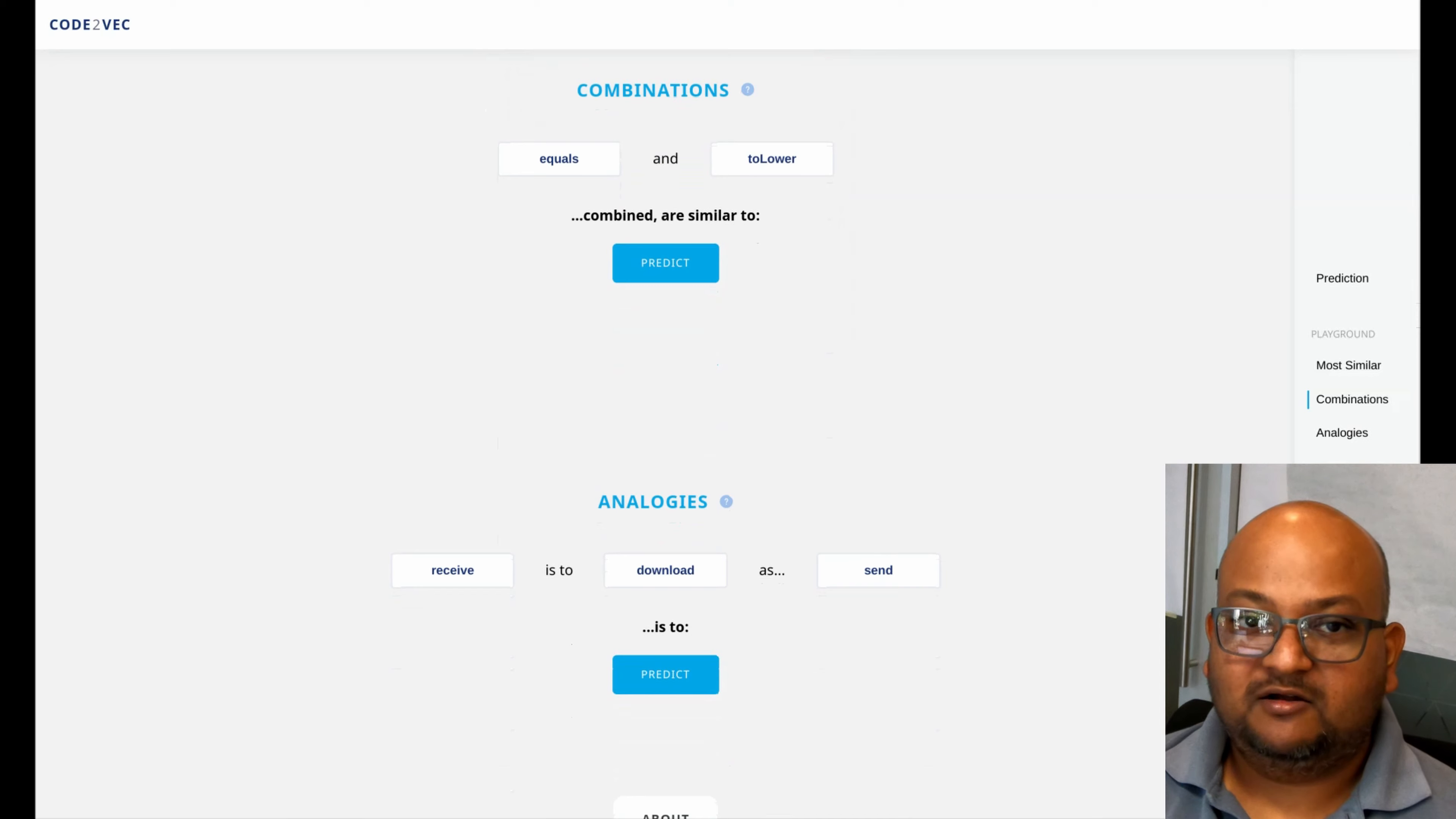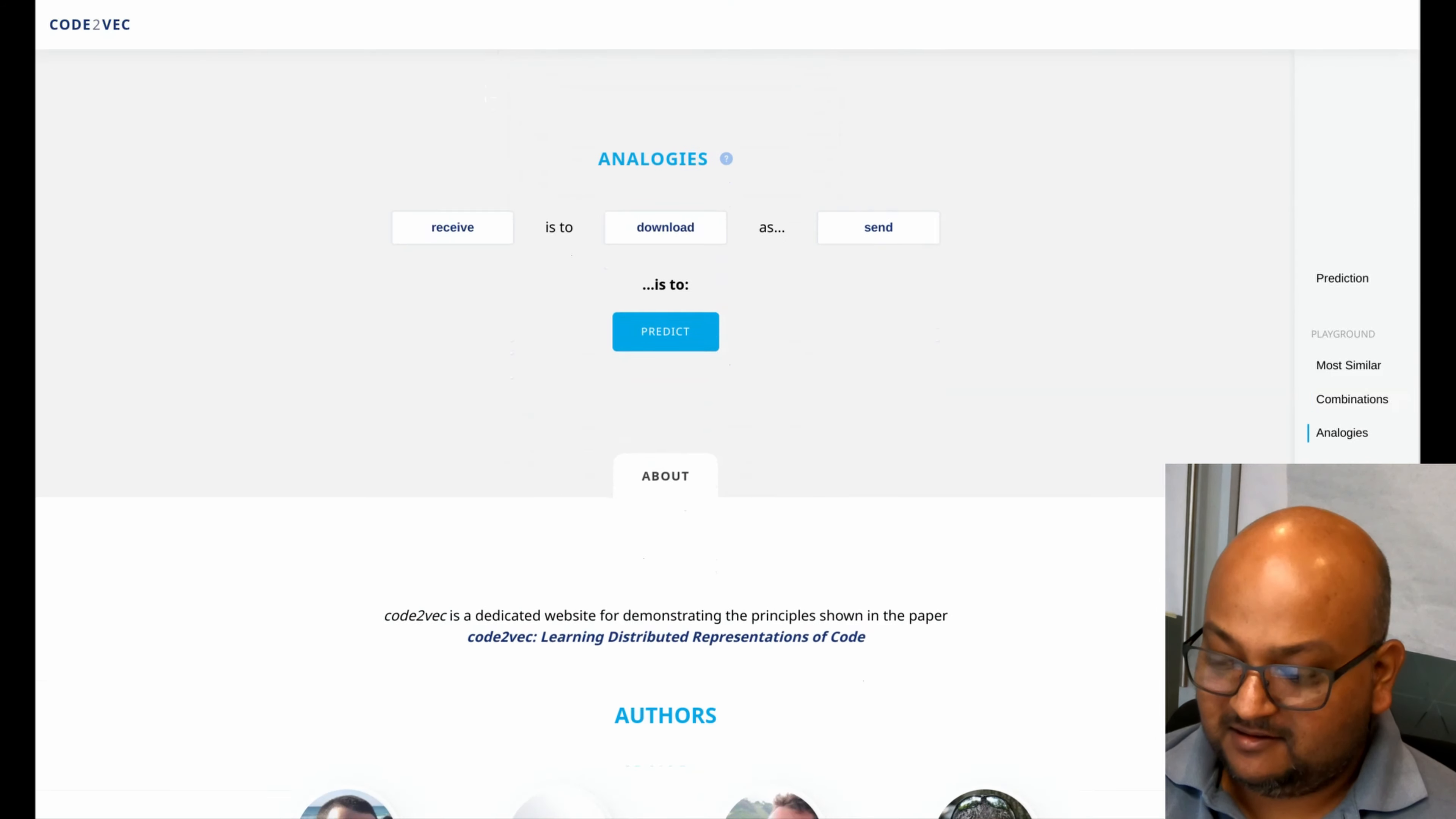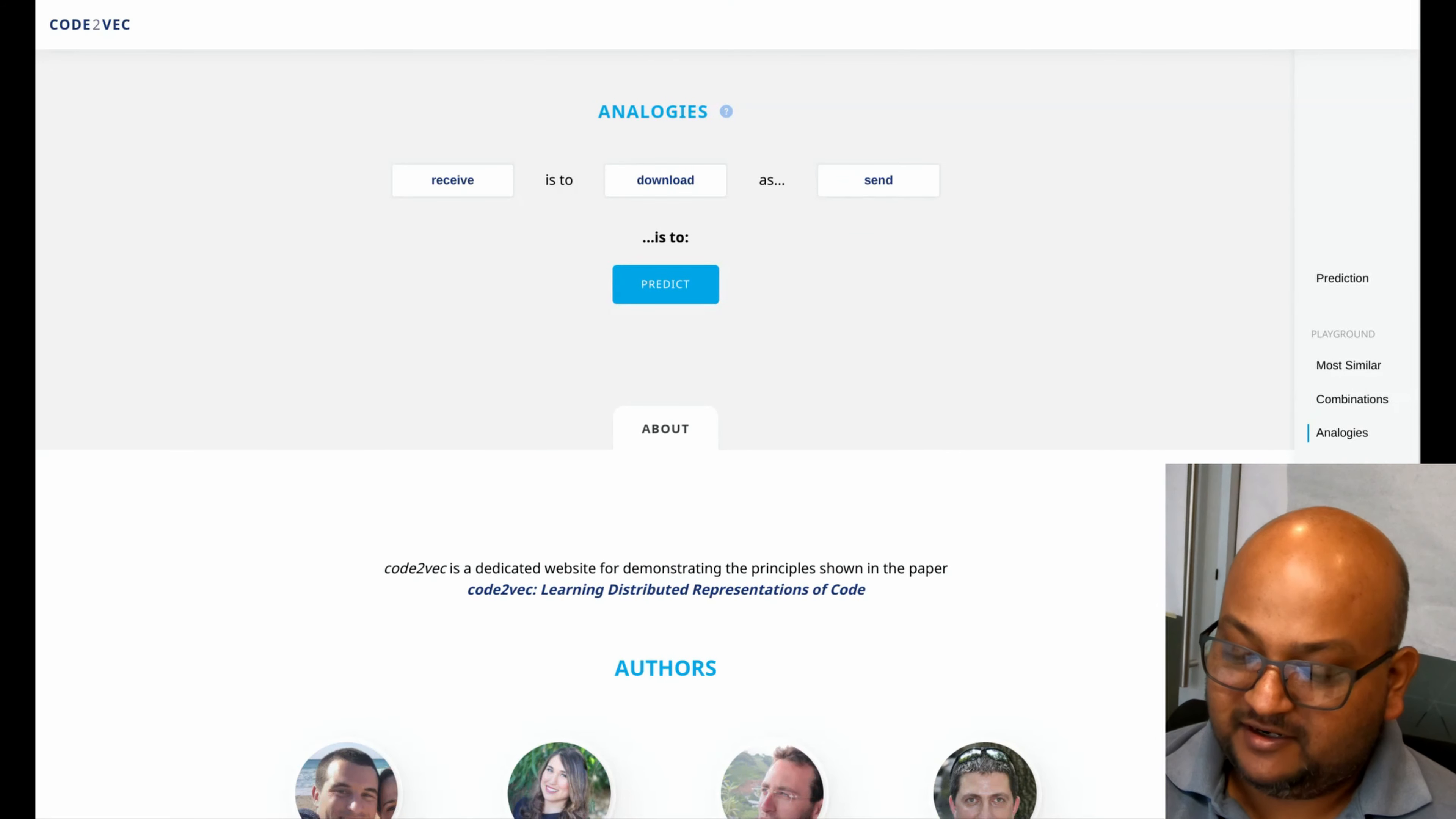The vector model also enables combinations. For example, if you want a combination of equals and to lower which checks for equality while converting its inputs to lowercase, you would get something like equals ignore case which does exactly that. And this is a very cool analogy implementation.